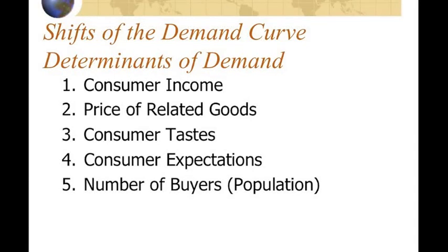Now let's look at the shifts of the demand curve and the things that can cause shifts in the demand curve. We refer to these five factors as the determinants of demand. You can see them here in front of you: consumer income, price of related goods, consumer taste, the consumer's expectations, and the number of buyers.